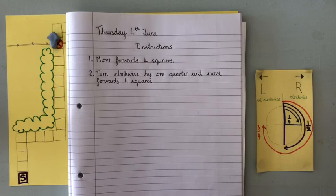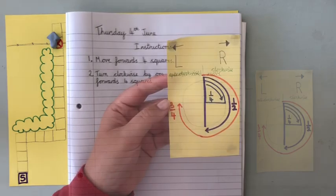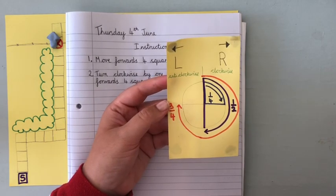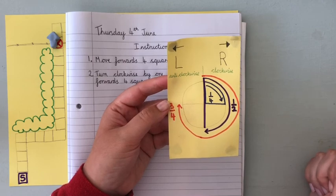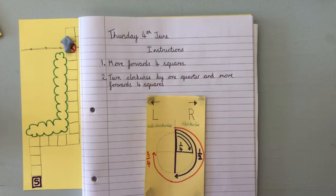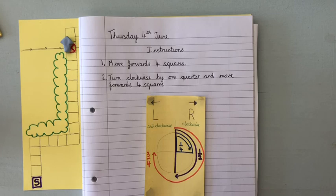It might be a good idea to have a practice with your instructions before you start writing them down — these instructions can be really tricky. You can even have a go at making one of these arrows and directing yourself around your house. Don't forget, if you're finding this too tricky, you can go back in the video and remind yourself about challenge one. Good luck everyone!